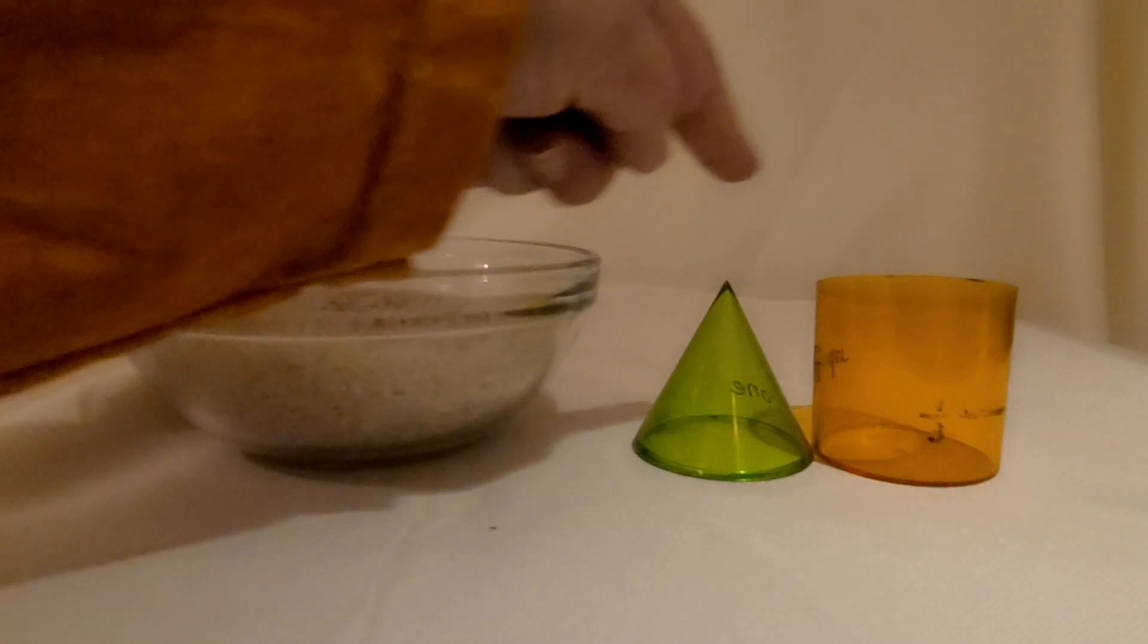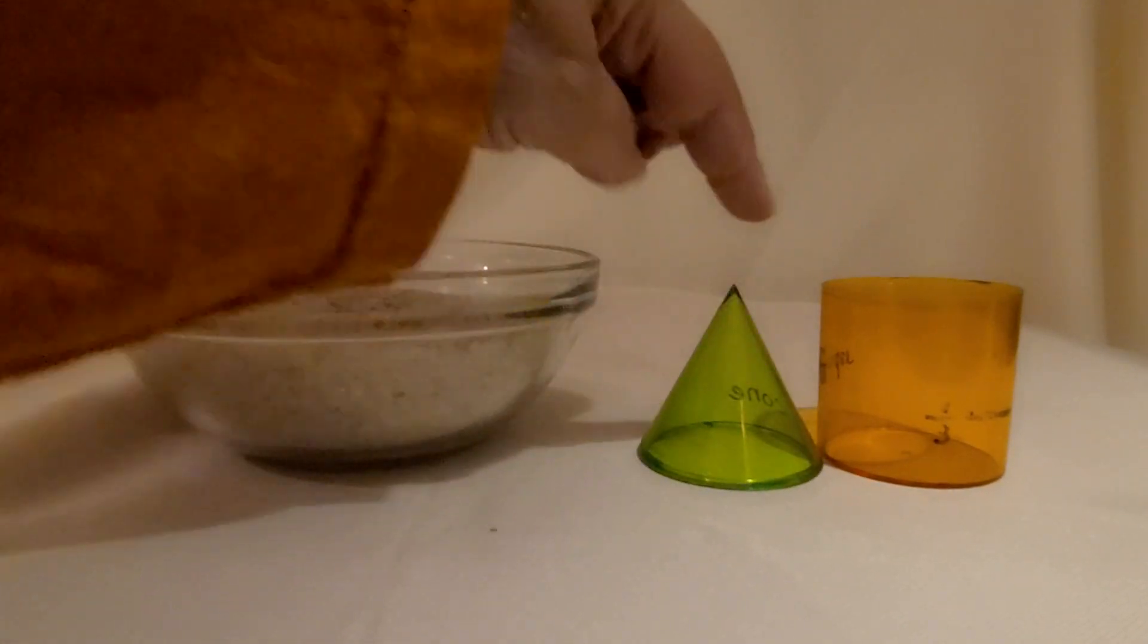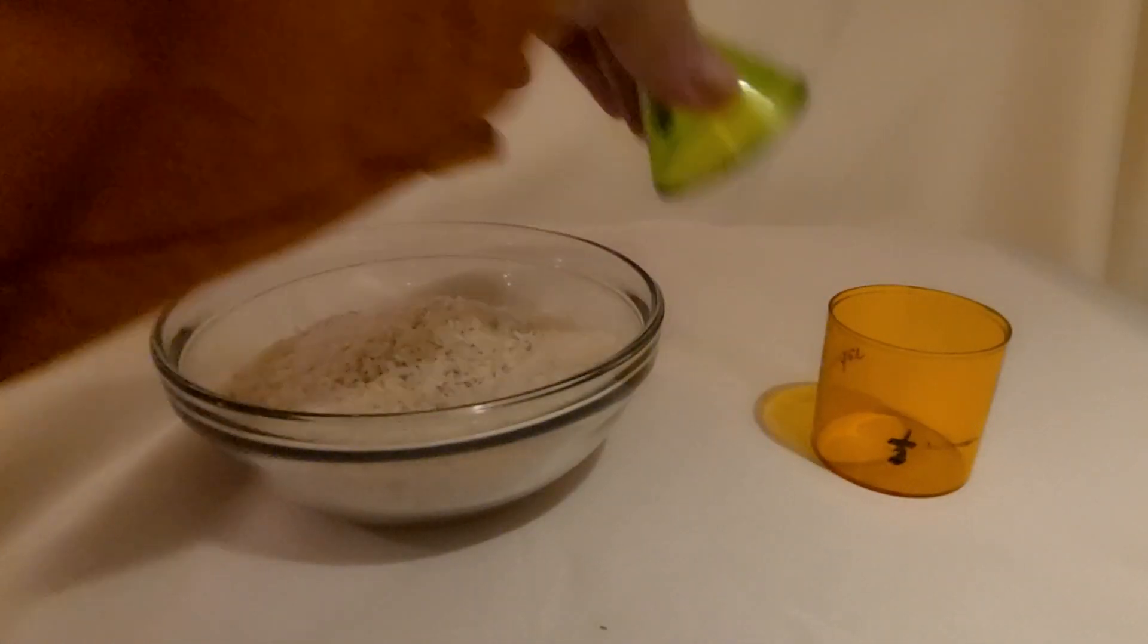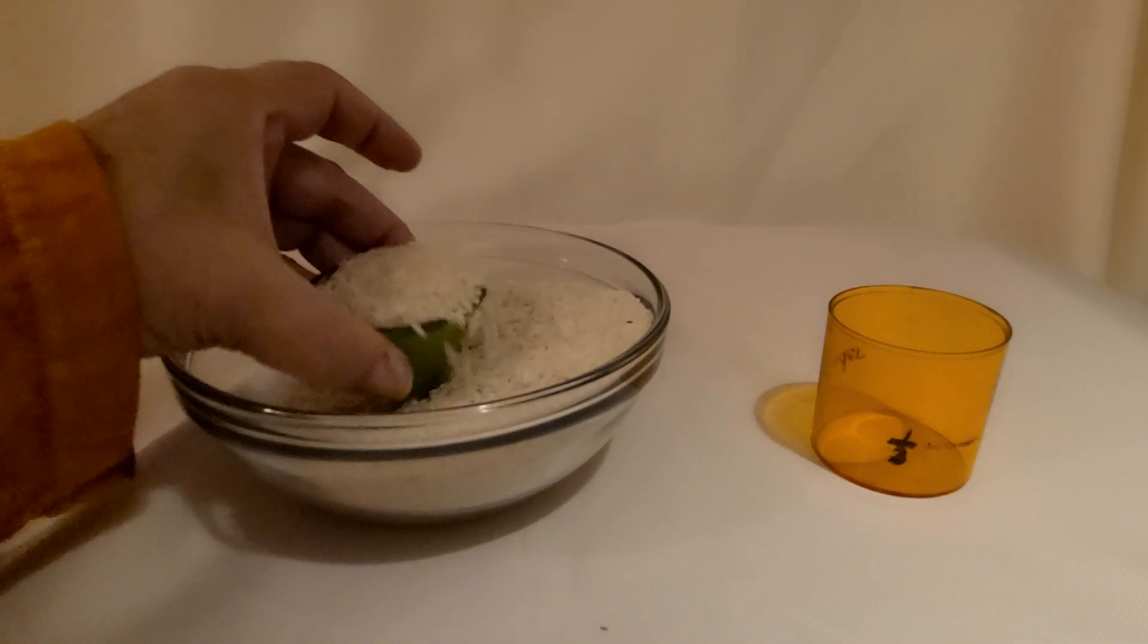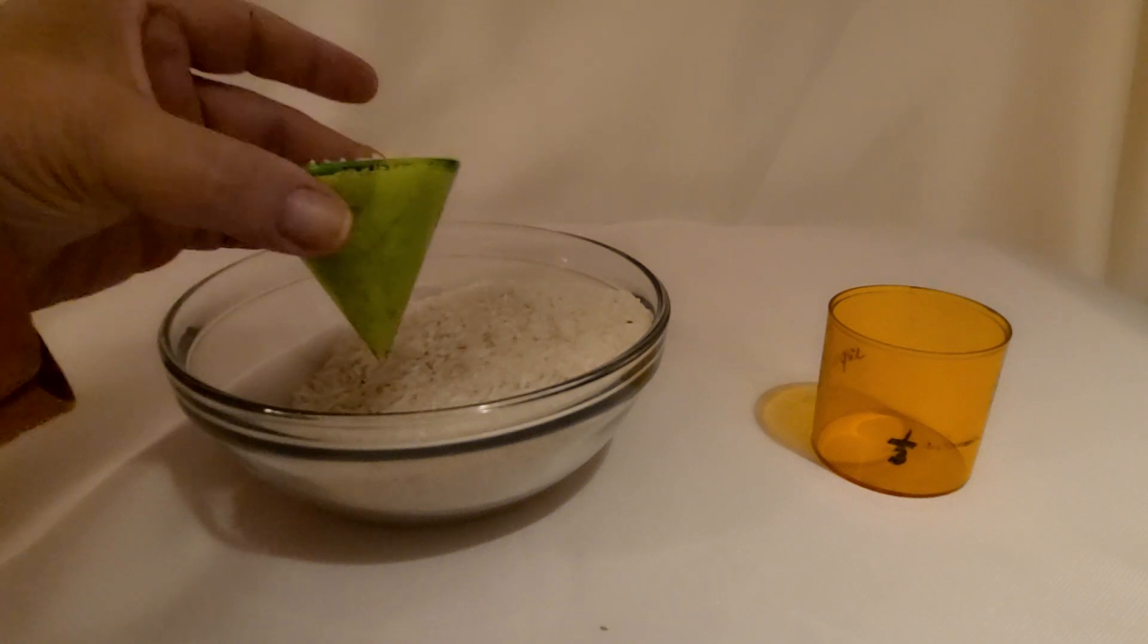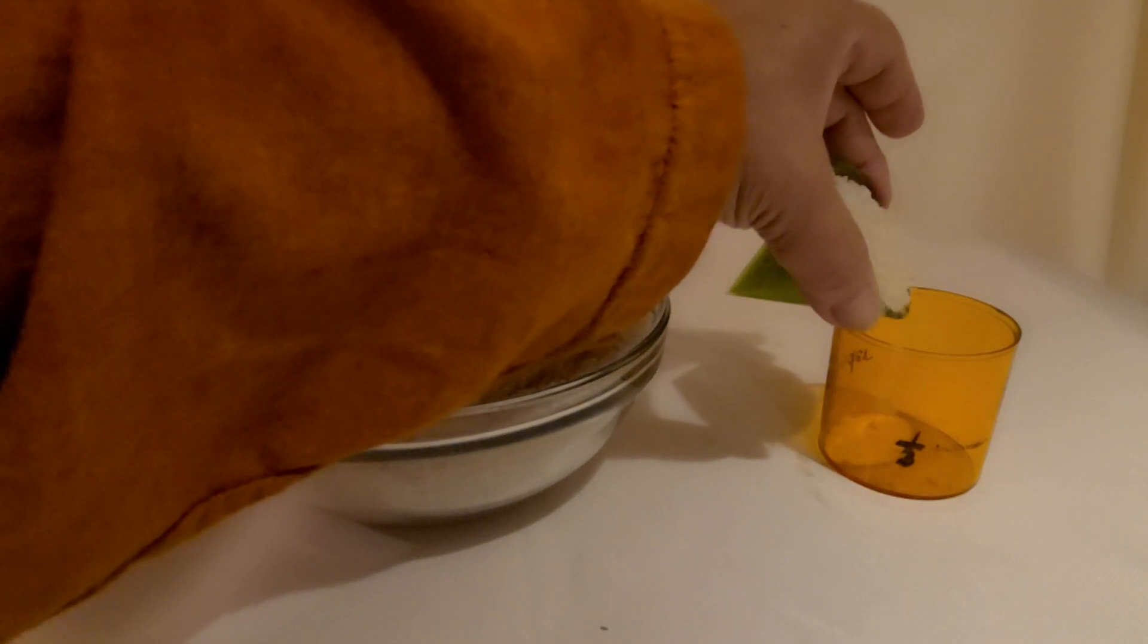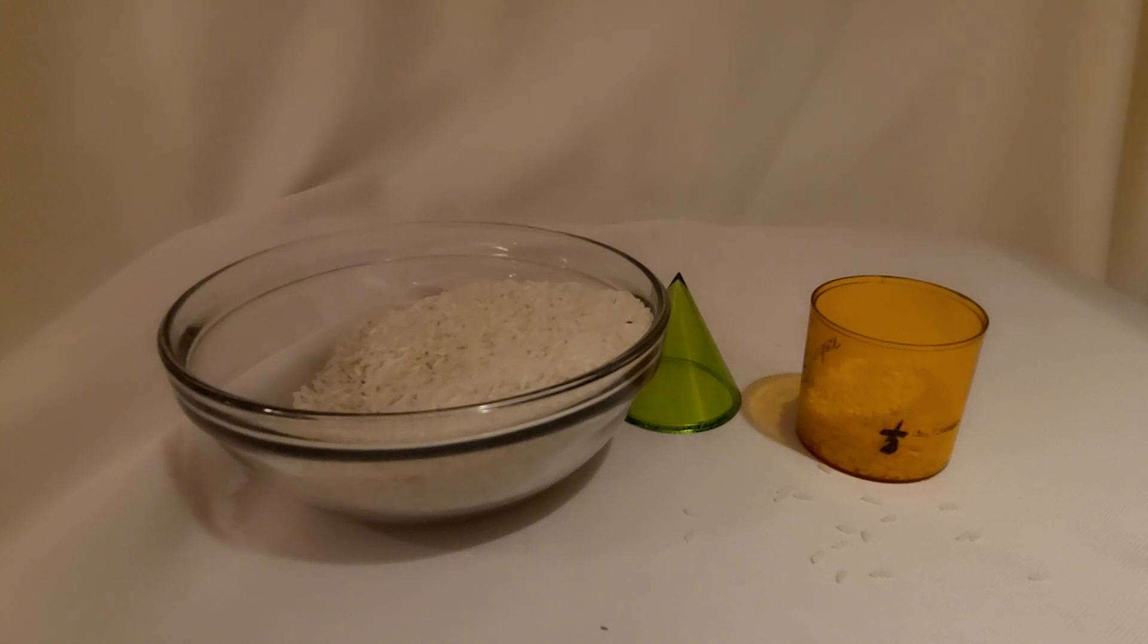Here I have a cylinder and a cone. They have the same base area and the same height. We're going to take this cone and fill it with rice so that it's flat across the top. We're going to fill this cylinder. You can see I've got a one-third mark on the cylinder right here. And look at that, it's one-third.